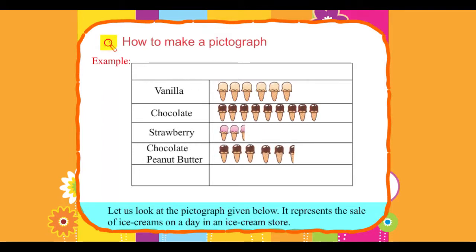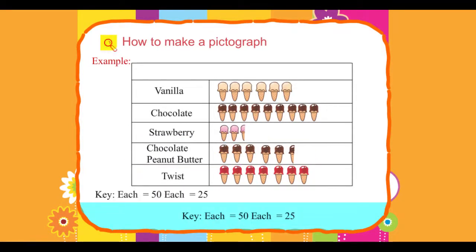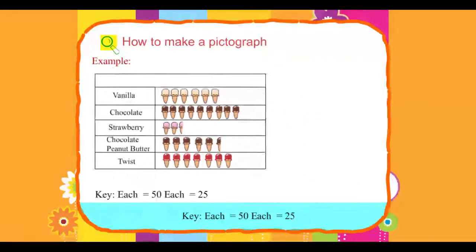ice creams on a day in an ice cream store. Ice cream sold: Vanilla, chocolate, strawberry, chocolate peanut butter twist. Key: Each cone equals 50. Each half cone equals 25.